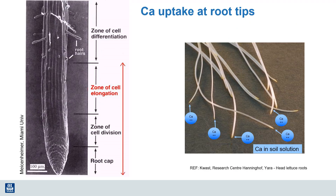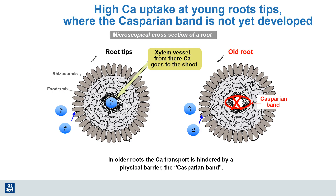Calcium uptake occurs only at the root tips from the soil solution, and it comes to the root primarily through mass flow. The reason for calcium uptake only at the root tips is that as older roots develop, they form an interior barrier called the Casparian band, which prevents calcium from being taken up. That Casparian band also protects the roots from other chemical and physical damage, but it also prevents calcium uptake once it's formed.